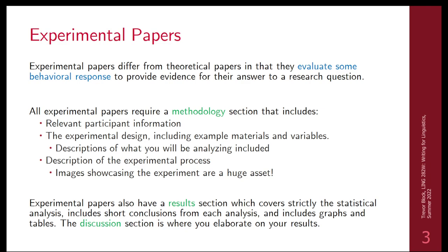Experimental papers will have things called methodologies, result sections, and discussions. When you do an experimental paper, what you're trying to do is ask a research question and solve it by getting different behavioral responses from participants. You might have a hypothesis that says people prefer one type of structure for ditransitives over another, and your job is to collect responses in order to prove that.